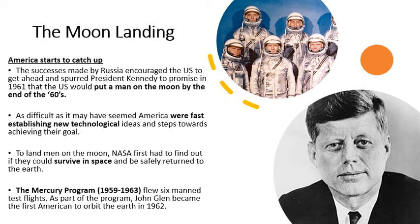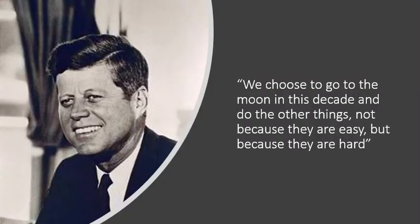This was quite dangerous — literally gambling by putting humans into space in completely unknown conditions. The first program was the Mercury Program, from 1959 to 1963, which flew six manned test flights. As part of this program the US sent the first American man into space — John Glenn — in 1962, just one year after the Russians had sent Yuri Gagarin. Kennedy's famous quote: 'We chose to go to the moon in this decade and to do other things, not because they are easy, but because they are hard.'